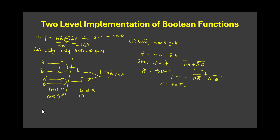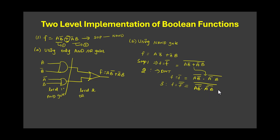Step 3: I apply another inverter. If I complement the result twice, I get back the original expression F. So the full converted expression becomes: F = ((AB̄)̄ · (ĀB)̄)̄, which is ready to implement using only NAND gates.